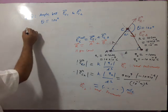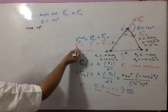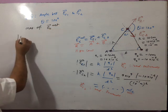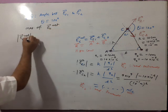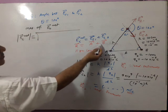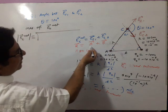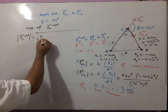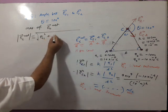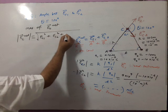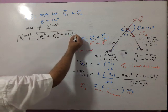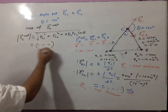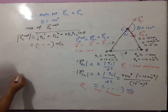Now, magnitude of resultant — EC net. Magnitude of resultant is under root of EC1² + EC2² + 2·EC1·EC2·cos θ. In place of A it is EC1, in place of B it is EC2. So you write: mod of EC1² + EC2² + 2·EC1·EC2·cos θ. You may solve it; answer must be written with units Newton per coulomb.